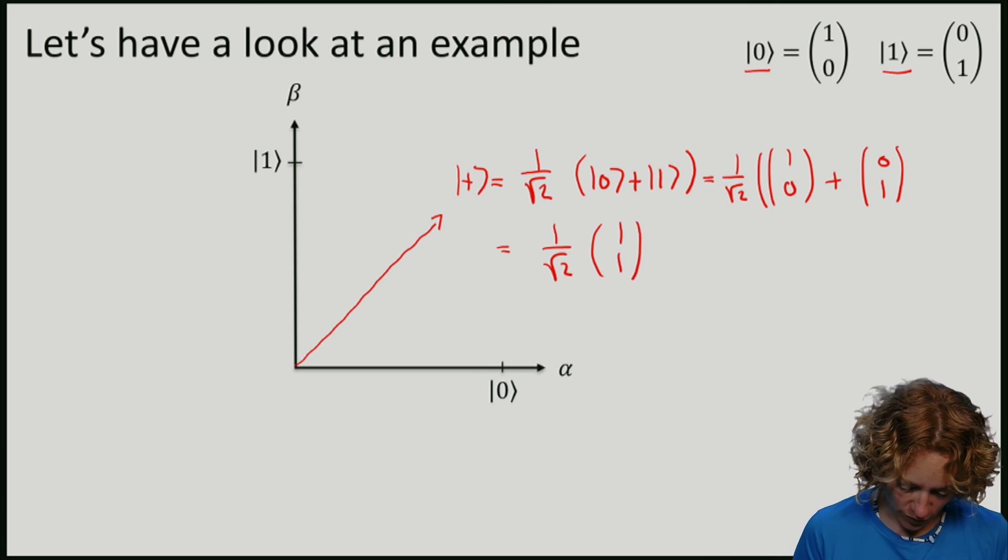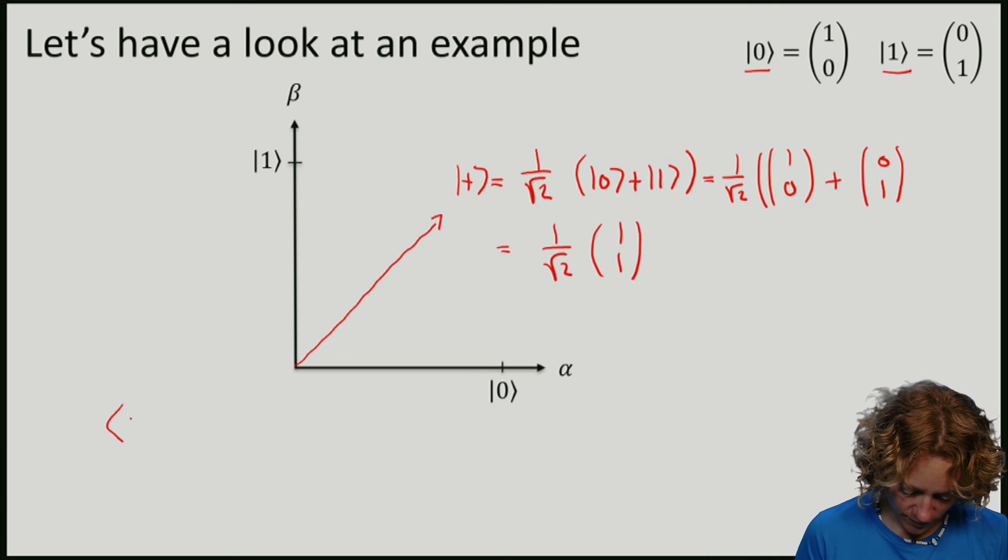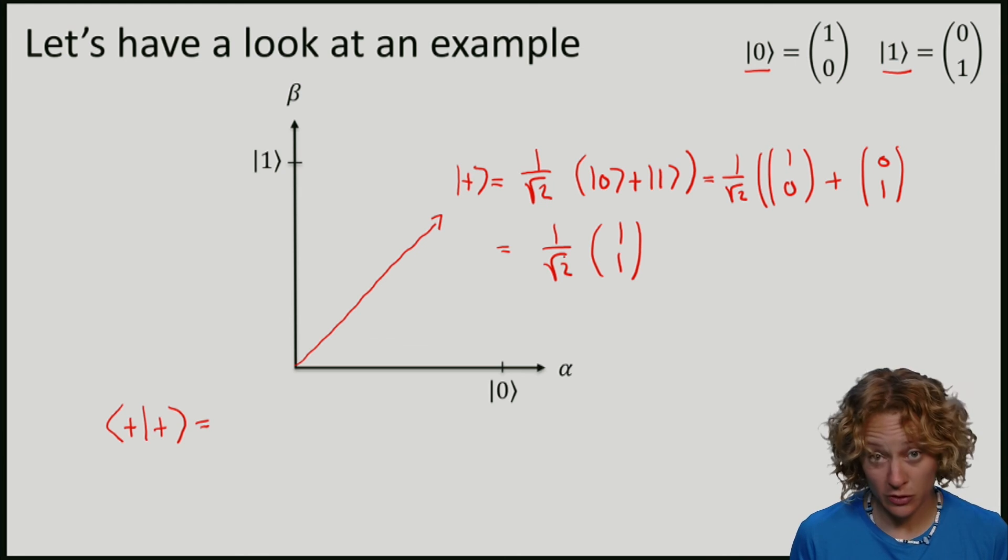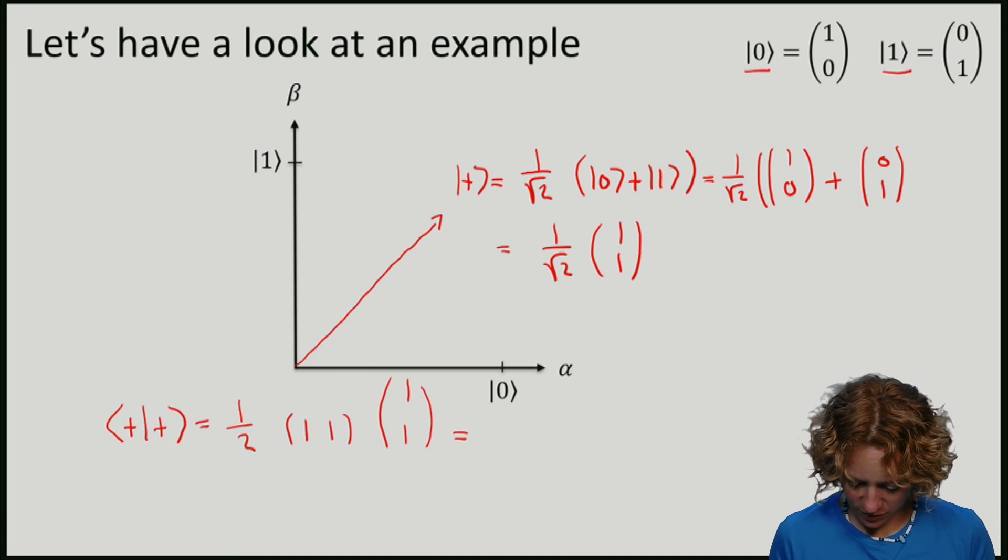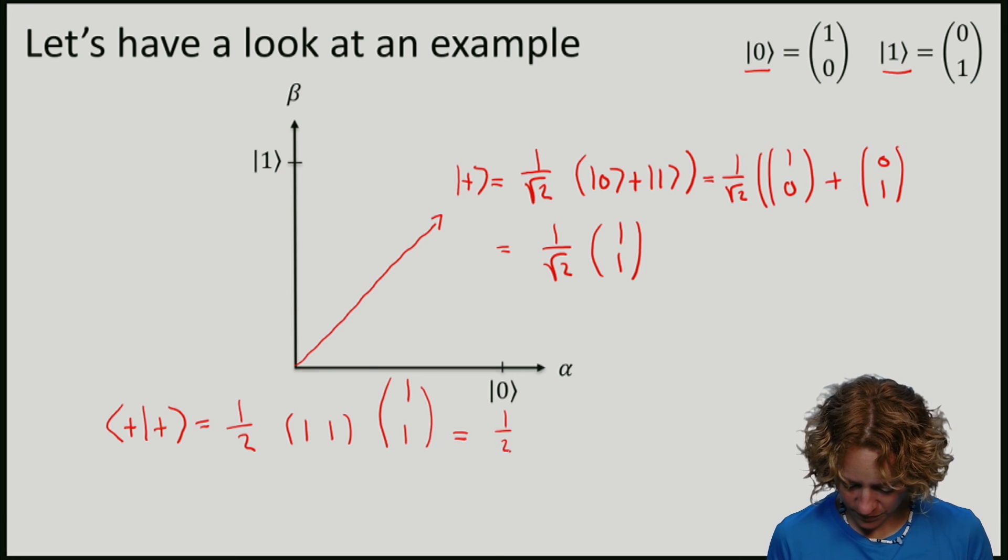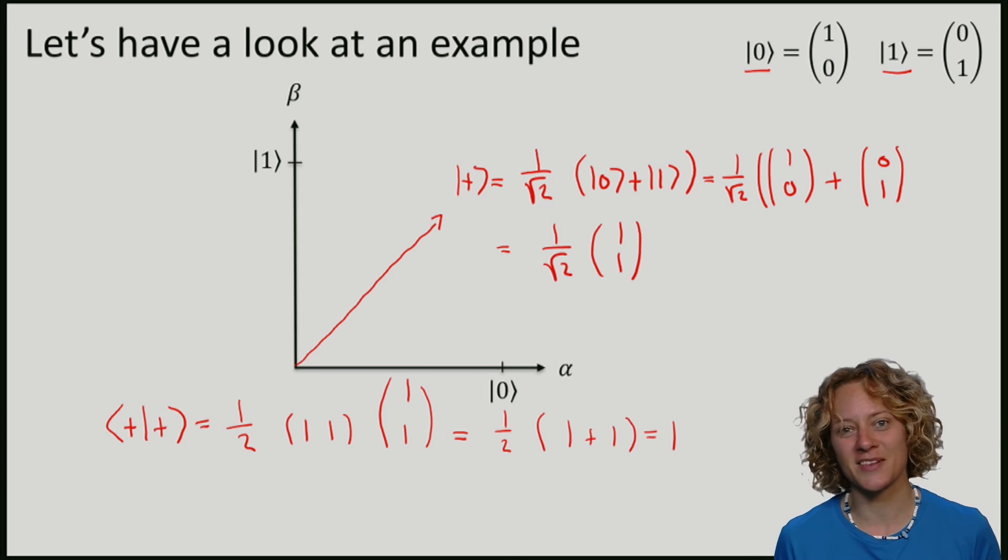So let me compute the inner product of plus with itself. So I have one over square root two, I have this twice. So multiplying these two numbers gives me a half. I have the transposed vector, I have the original one. So let's compute that. We have half times one plus one, which is one as promised.